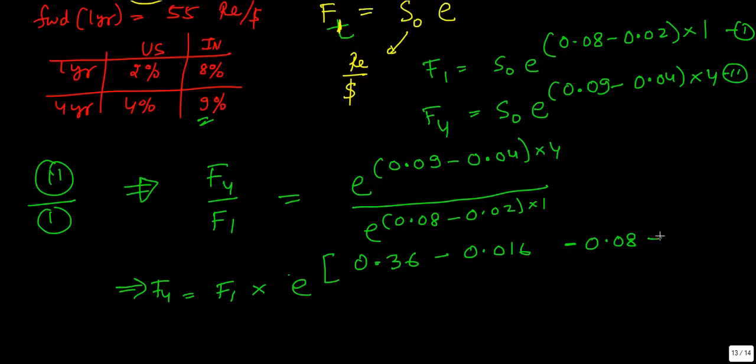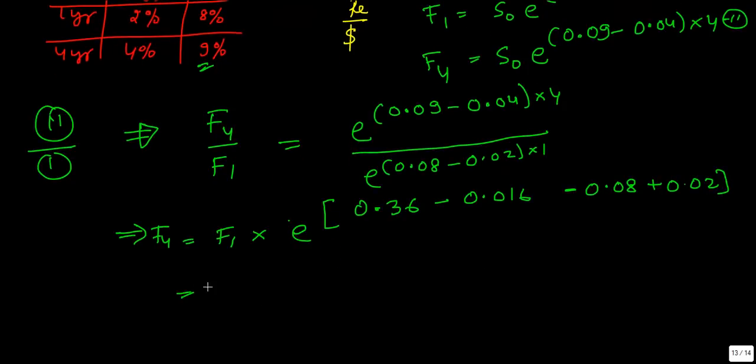It is a very simple problem. F1 over here is given as 55 e to the power, so 36 minus, so it should be 0.16, sorry, this should be 0.16. 36 minus 16, 20 plus 2, 22 minus 8 is 14, so you have 0.14.